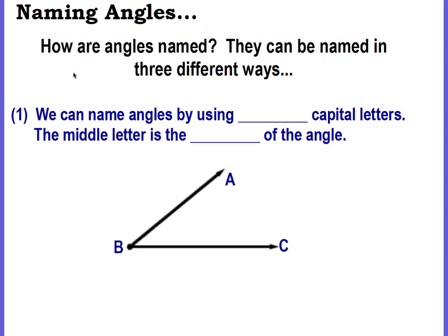Naming angles. How are angles named? They can be named in three different ways. The first way is we can name angles by using three capital letters. The middle letter is the vertex of the angle.